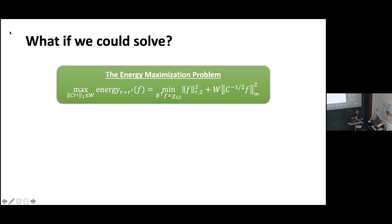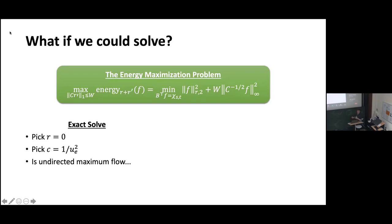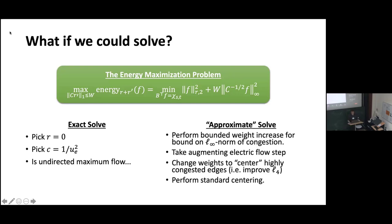We could try to solve this undirected flow problem. Unfortunately, there's a slight issue: if we let resistances be zero and pick weights on the L-infinity part appropriately, this is just minimizing L-infinity over unit flows, which is exactly maximum flow. So solving this problem exactly is just as hard as solving maximum flow. But what if we could approximately solve it? If you approximately solve the problem, you get corresponding bounds on congestion, and you can take the step and do a little correction to help the L4 norm.